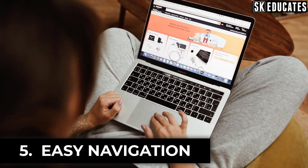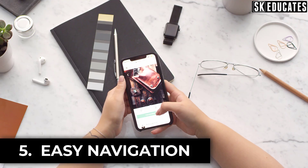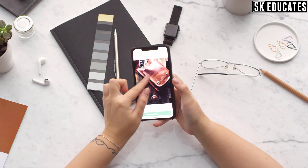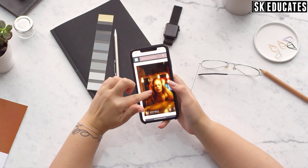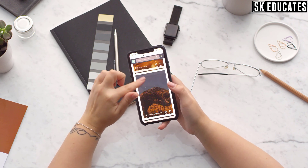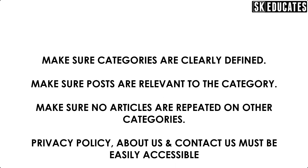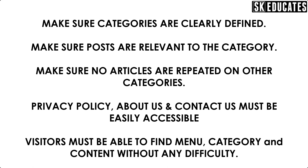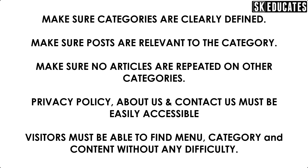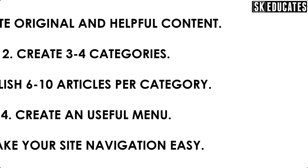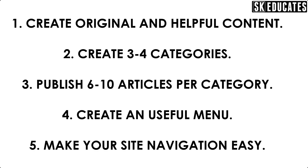The last and important step is the navigation of your site. You must ensure your site is easy to navigate. Google always checks to ensure visitors can access your content easily. Make sure categories are clearly defined, posts are published relevant to their category, no articles are repeated under multiple categories, and Privacy Policy, About Us, and Contact Us pages are easily accessible. Visitors must be able to find the menu, categories, and content without any difficulty.